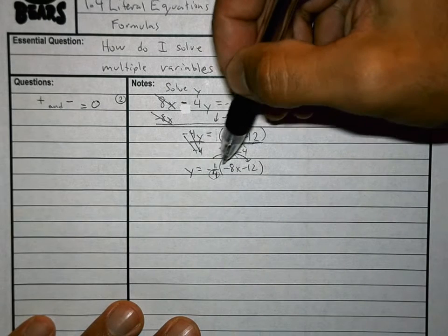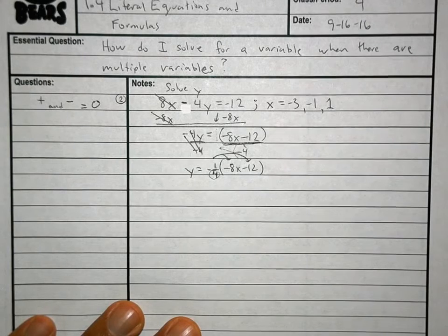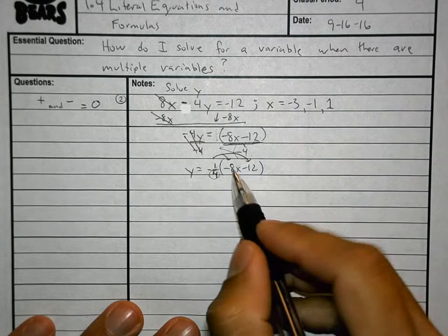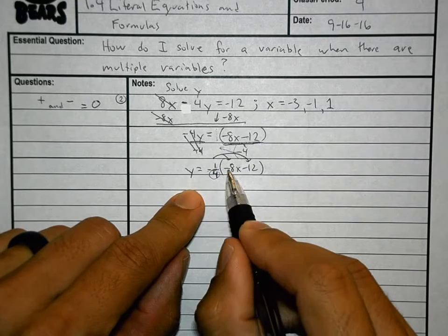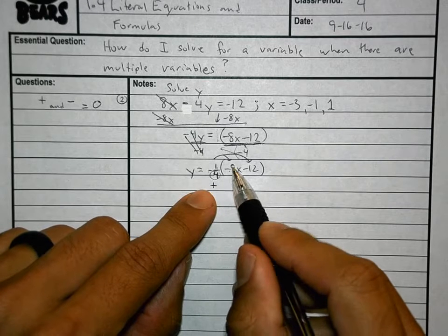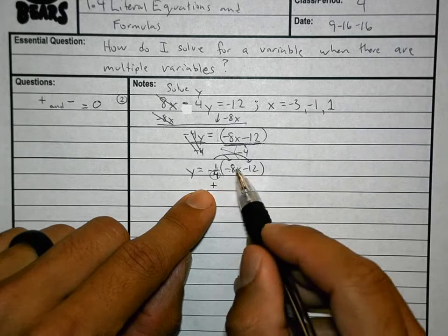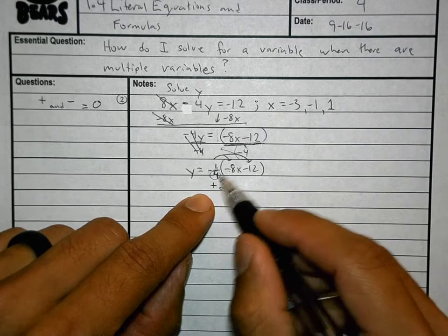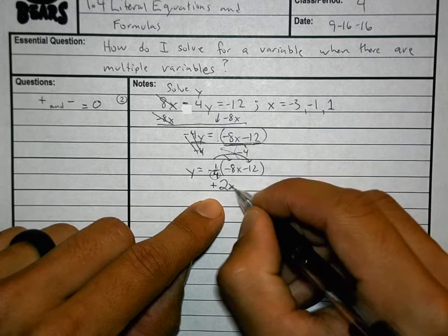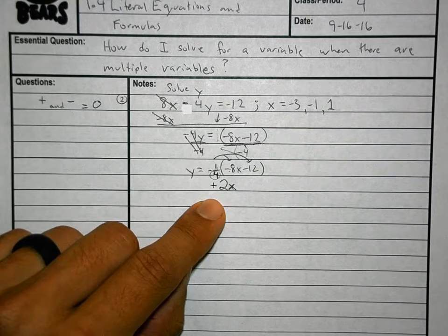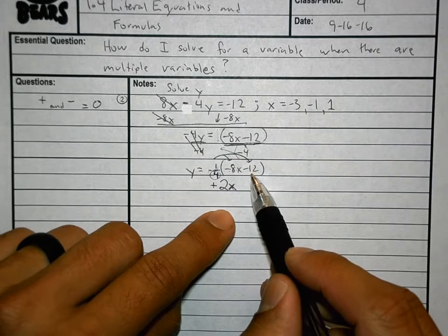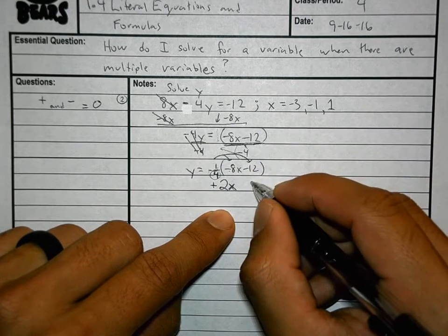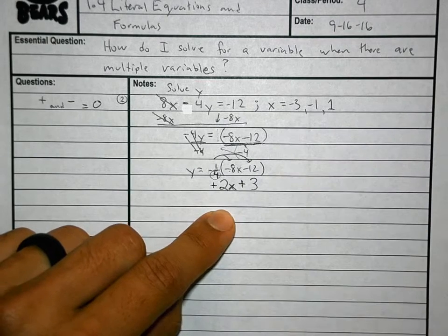What is negative 1/4 times negative 8x? Let's do this by pieces. What's a negative times a negative? Positive. 8 divided by 4 is 2, and the x is right next to it — we leave it. Positive 2x is what it should be. Now, negative 1/4 distributed to the other term: negative 1/4 times negative 12 is positive 3 — positive. Got to put the plus sign there. Equals y.